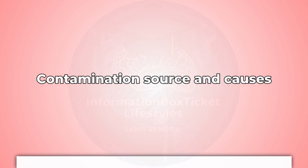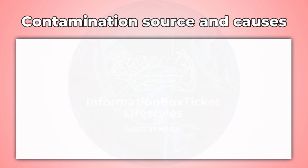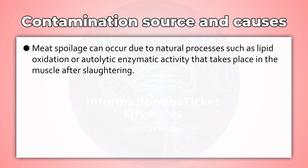Contamination Source and Causes. Meat spoilage can occur due to natural processes such as lipid oxidation or autolytic enzymatic activity that takes place in the muscle after slaughtering.